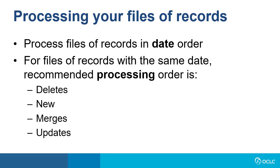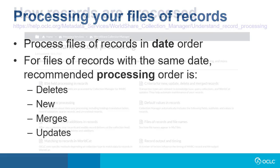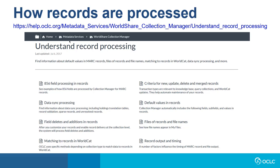Now that you've downloaded your files of records, some recommendations when processing files. Process your files in the order of the date of the file output. Process your files for the same date in the order of the transaction type of records: start with deletes, then new, then merges, and then updates. To understand the criteria for transaction types of records and why a record is included in your file of records, visit the Help page Understand Record Processing for more information.